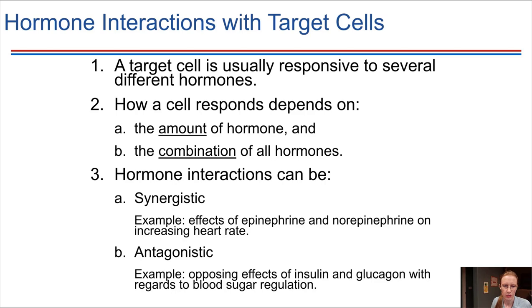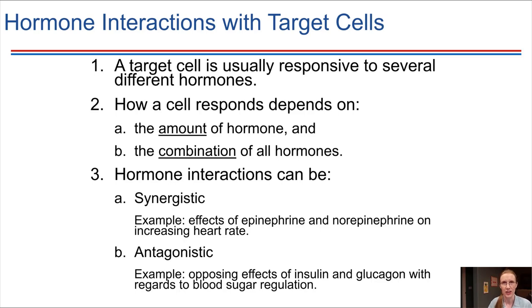Alternatively, we could have hormones that have opposing effects. A good example that we've already mentioned in class is insulin and glucagon — these have opposite effects in terms of blood glucose levels. Insulin promotes cells to take up glucose, which lowers the glucose concentration in the blood. Glucagon does just the opposite: it promotes the breakdown of glycogen into glucose, which raises blood glucose levels in the body.